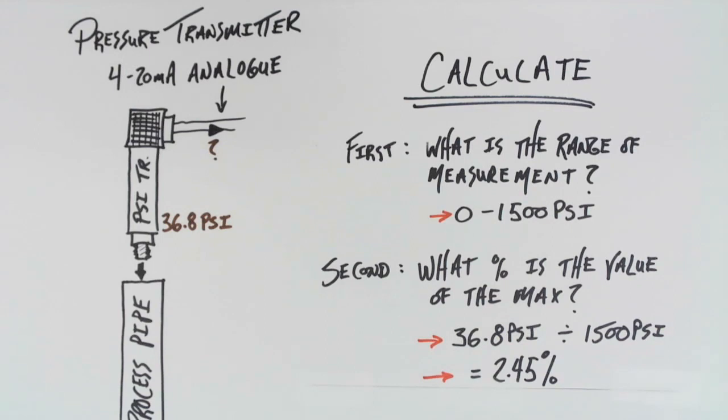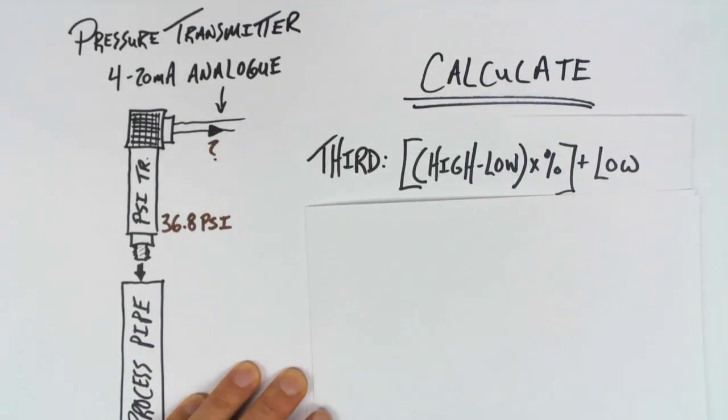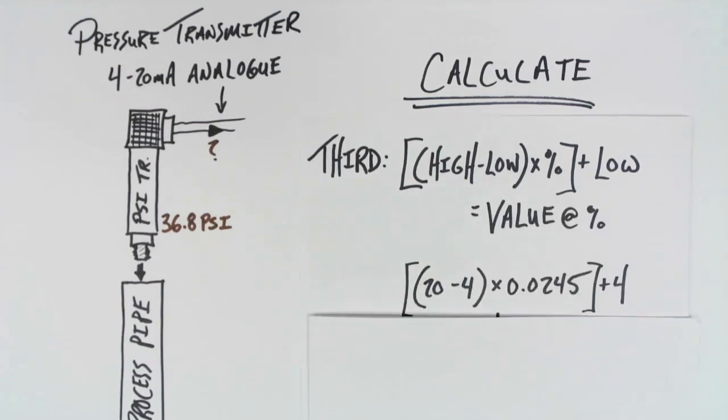Now that I have this, I can look towards the analog signal and do a final calculation to determine how many amps should actually be flowing to the pressure transmitter. The third step uses this calculation. The high value minus the low times the percentage plus the low again at the end. What this looks like is then 20 minus 4 times 0.0245, and then we add 4 in at the very end.